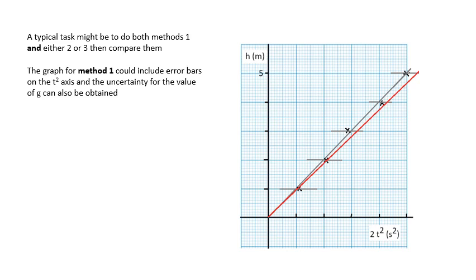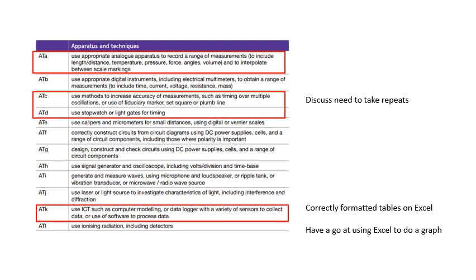Make sure you discuss the need to take repeats in method one, as this minimizes the effect of random errors. For ICT, if you're not using a data logger, use correctly formatted tables on Excel and have a go at doing your graphs on Excel too — it takes practice but covers the use of ICT. You should also get to use a data logger at some point in your course, as your physics department should have some.